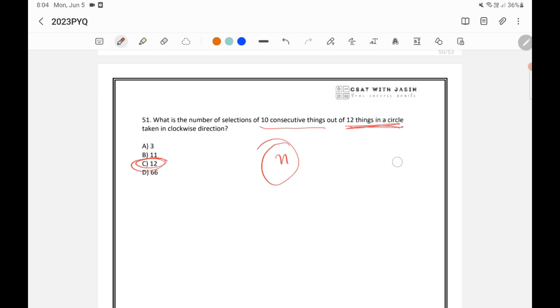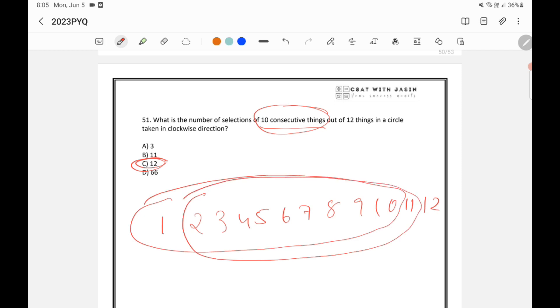Now if the same question is like 12 things in a row, that means if it is like this 1, 2, 3, 4, 5, 6, 7, 8, 9, 10, 11 and 12, it is in a row, then it is asked how many, what is the number of selections of 10 consecutive things? Then it will not work like that because I can select like 1 to 10. This is 10 consecutive things. I can select like this. This is also 10 consecutive things and I can select from starting from 3. This is the only possibility.